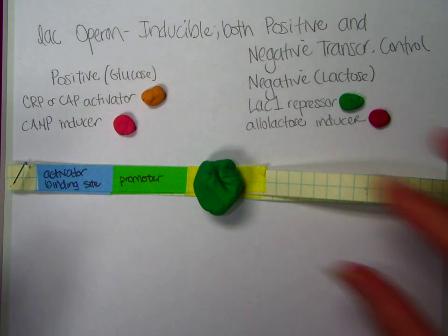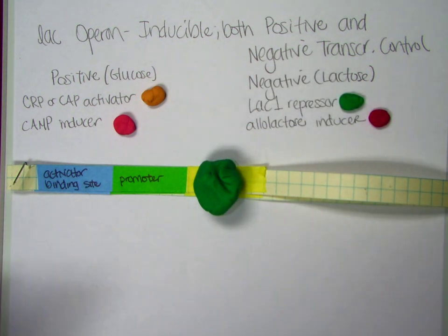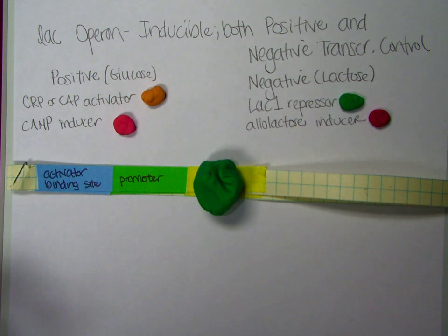And this no transcription happens because the repressor is sitting on the operator. If we do not have the substrate to catabolize, we don't need to be transcribing these genes.